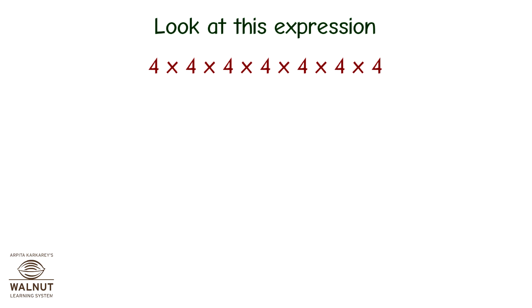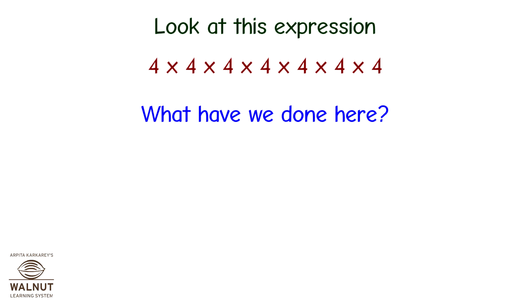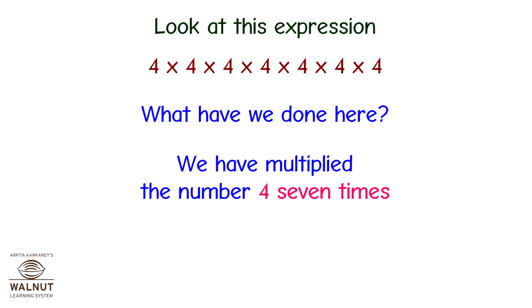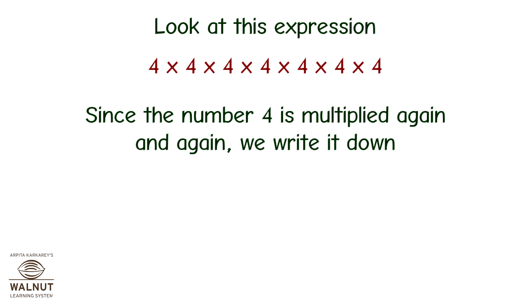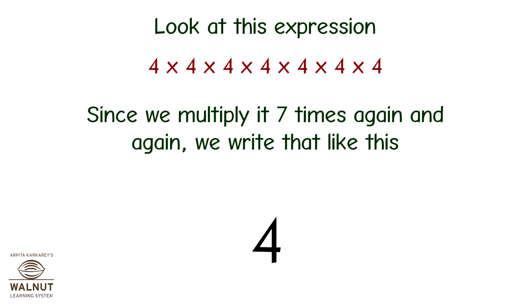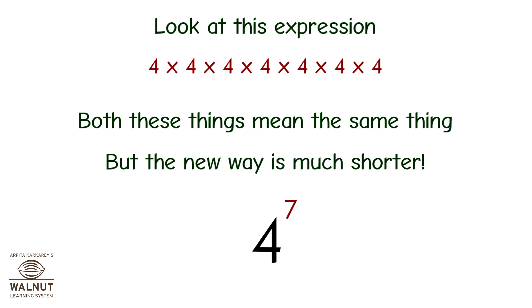Look at this expression: 4 multiplied by 4 multiplied by 4 multiplied by 4 multiplied by 4 multiplied by 4 multiplied by 4. What have we done here? We have multiplied the number 4 seven times. Since the number 4 is multiplied again and again, and we multiply it 7 times, we write it in a new shorter way. Both these things mean the same thing, but the new way is much shorter.